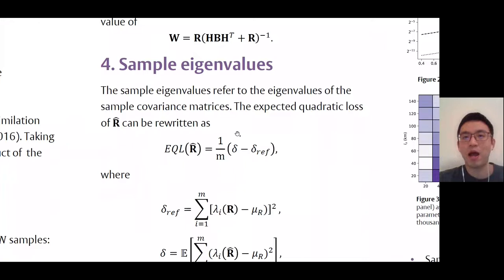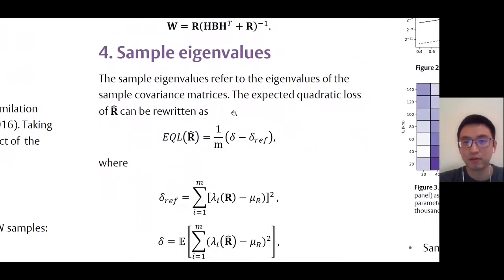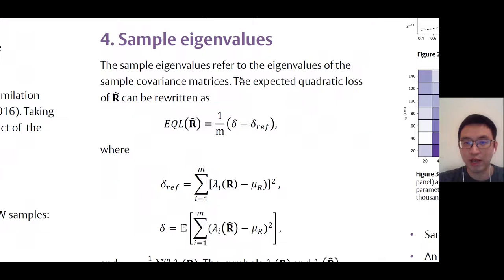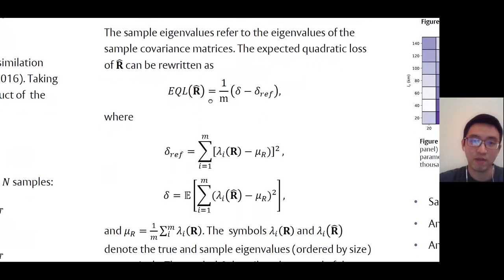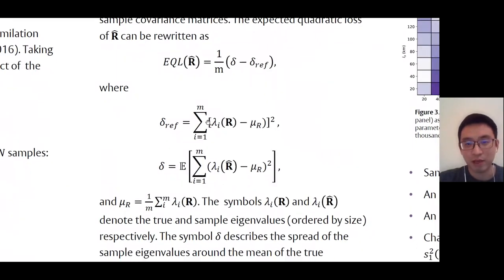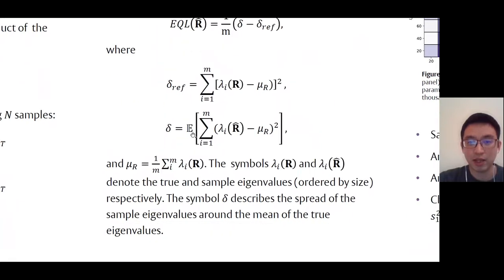We will also look at the sample eigenvalues, which refer to the eigenvalues of the sample covariance matrices. Lidoid and Wolff also show that the expected quadratic loss of A hat can be written in this way, where delta rife gives us the variance of the true eigenvalues. Here mu r is the average of the true eigenvalues, and delta describes the spread of the sample eigenvalues around the mean of the true eigenvalues.